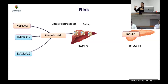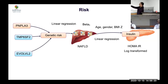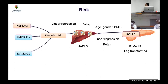Beta X tells you what component of NAFLD is explained by the genetic risk. Second, they calculated how much NAFLD affects HOMA-IR — a linear regression corrected for age, gender, and BMI — to show how much fatty liver affects insulin resistance independent of confounders. This coefficient was called beta Y. HOMA-IR was log-transformed to normalize its distribution before analysis.